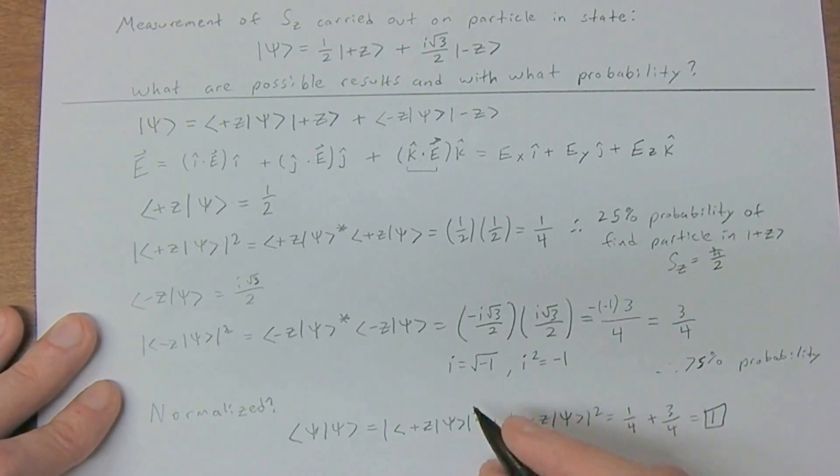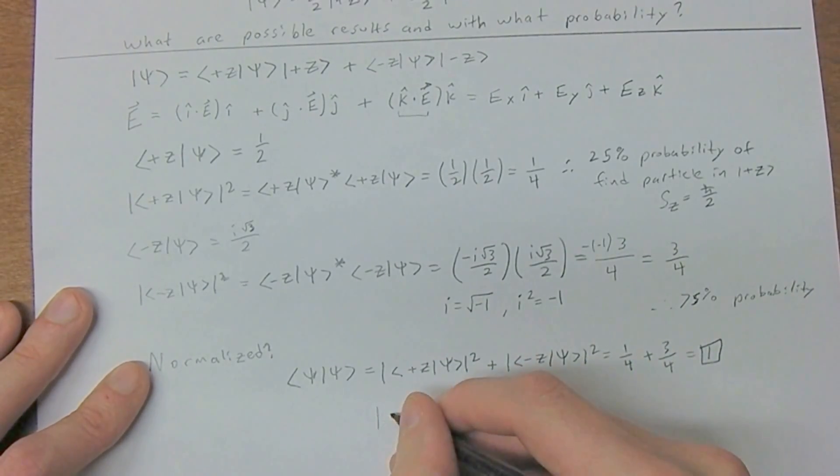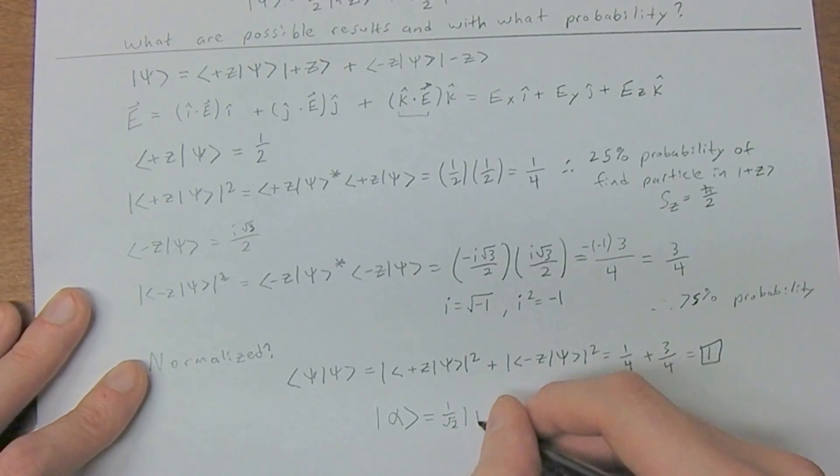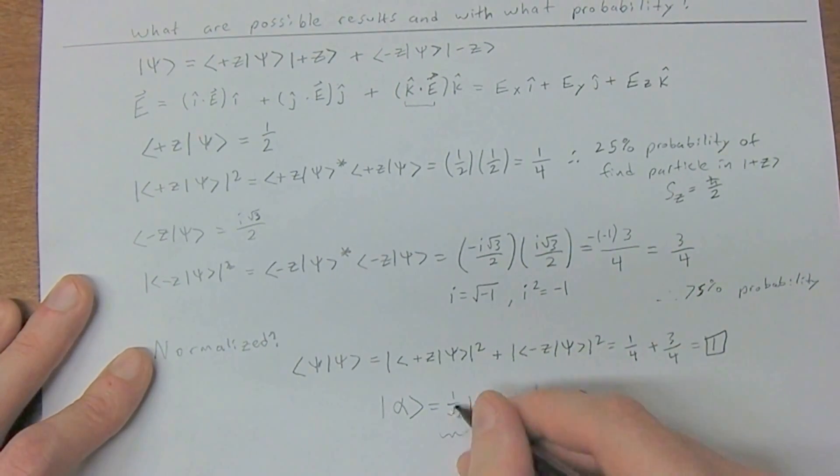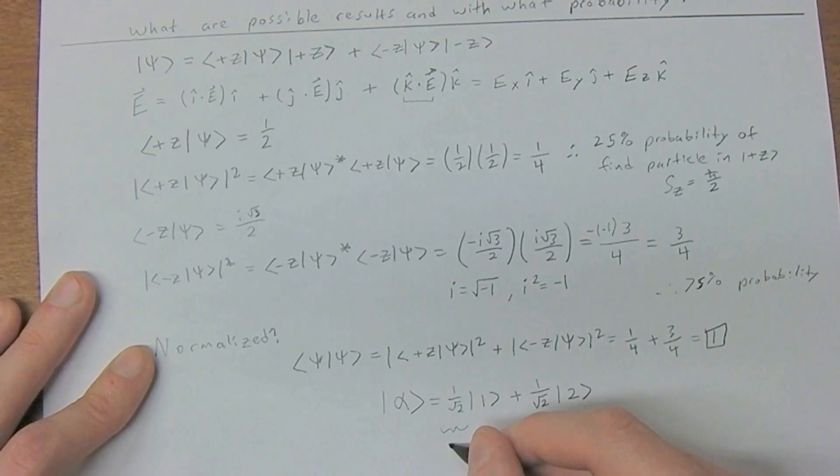Just for comparison, another one you could do is some arbitrary alpha equal to one over the square root of two times some state we're going to call one, plus one over the square root of two times some basis state we're just going to call two right now. Is this normalized? Well, we know it is, because we multiply the complex conjugate times this. One over the square root of two times one over the square root of two is one half, and same here. If we add them both up, we get one. So that's all it means to be normalized.